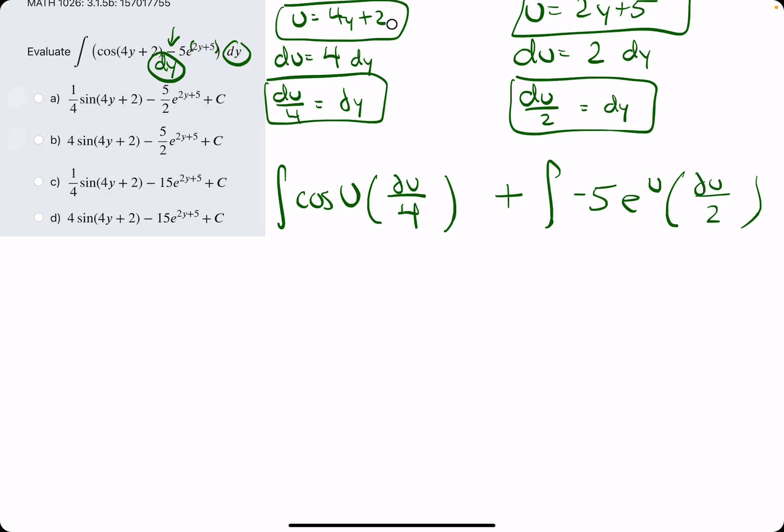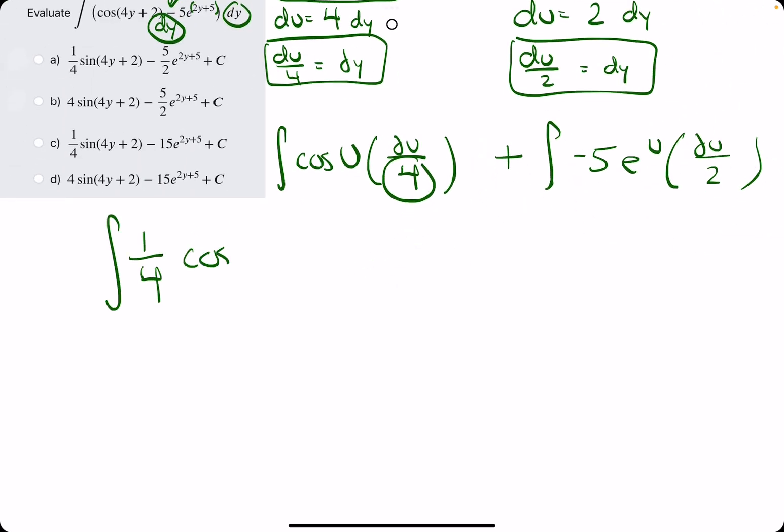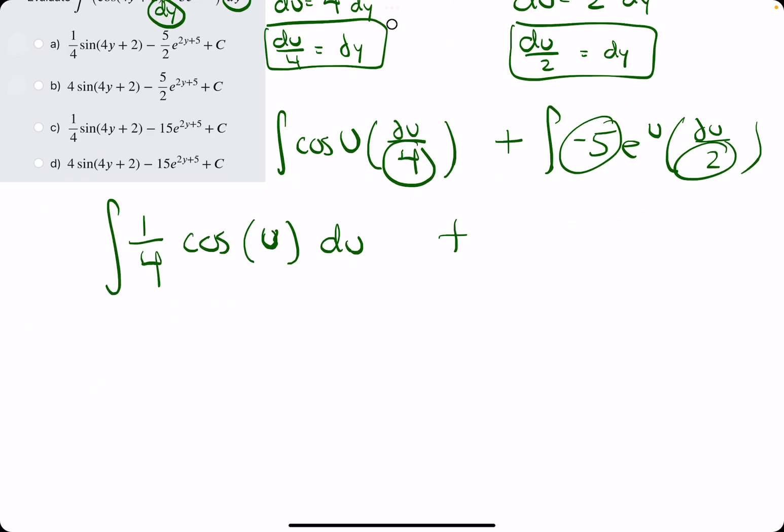Now, evaluating these integrals, or rewriting them first, the 4 on the bottom is telling us we have 1/4 cosine of u du plus, and then here we have negative 5 over 2. So the integral of negative 5 over 2. So e to the u du, the antiderivative of positive cosine is positive sine of u. All these coefficients, the 1/4 and the negative 5 over 2, just stay the same. Antiderivative of e to the u is e to the u.